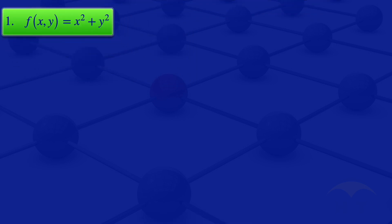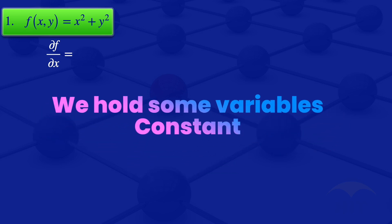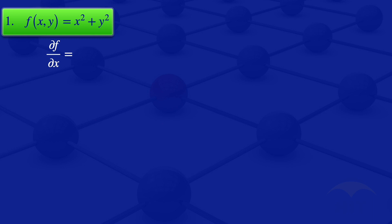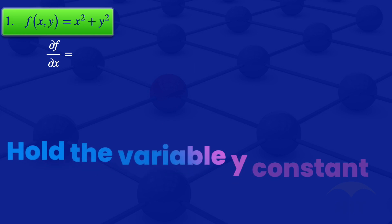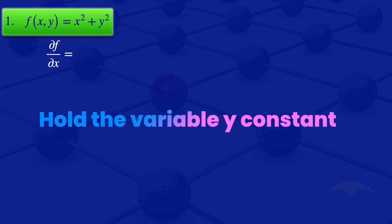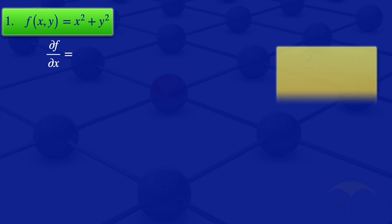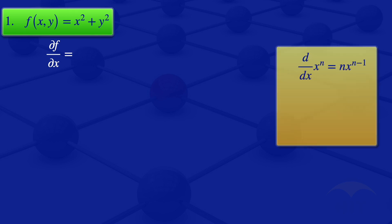I'll evaluate the partial derivative of f with respect to x. A partial derivative is a derivative where we hold some of the variables constant. In this case we are differentiating with respect to x, which means we hold the variable y constant. Recall that the derivative of x to the power n is n times x to the power n minus 1, and the derivative of a constant is zero.